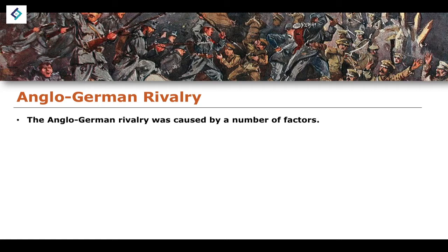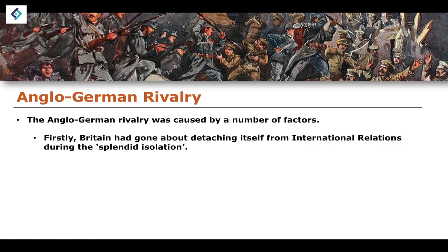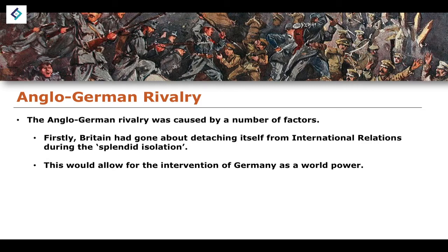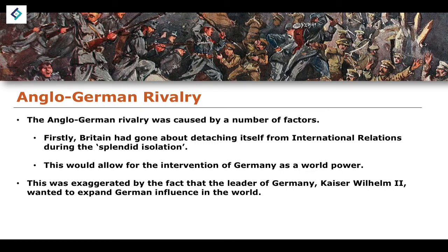Where does the Anglo-German rivalry come from? It was caused by a number of factors. Firstly, Britain had detached itself from international relations during what we note as the splendid isolation during the majority of the 1800s. This allowed Germany to use the resulting power vacuum to enter the international stage in 1871 as a major world power, essentially taking the place of Great Britain. This was exaggerated by the fact that Kaiser Wilhelm II wanted to expand German influence across the world. So not only was Britain becoming more isolationist, but Germany was becoming more expansionist — culminating in Germany growing in power significantly while Britain had less influence, especially within Europe.